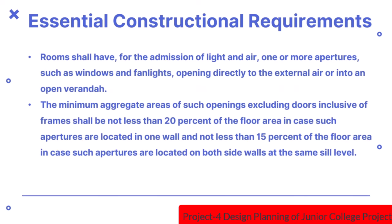For the admission of light and air, rooms shall have one or more apertures such as windows and fan lights opening directly to external air or into an open veranda. The minimum aggregate area of such openings, excluding doors but inclusive of frames, shall not be less than 20% of the floor area when apertures are in one wall, and not less than 15% of the floor area when apertures are on both side walls at the same sill level.